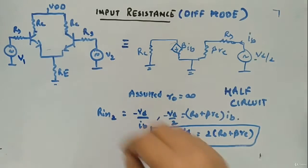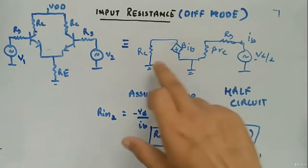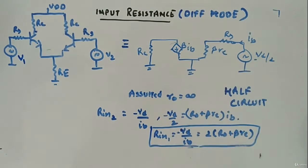So the circuit is similar, just we are looking from here. So beta Ib, beta Re, Rs, RC. Apply KVL in this side, assuming R0 is infinite, you will have minus Vd by 2 is equal to